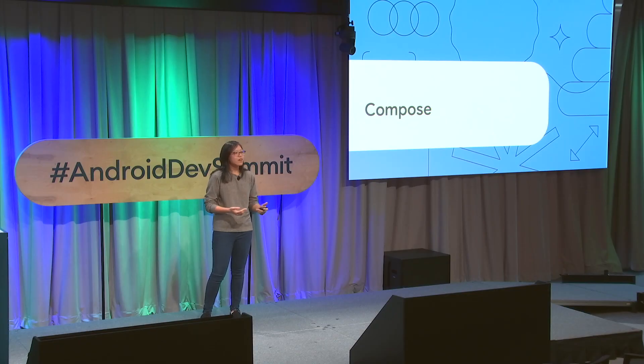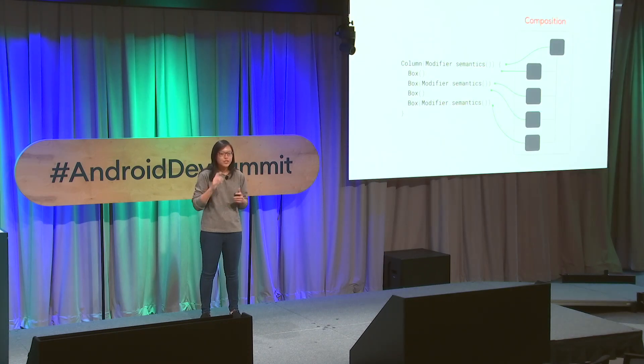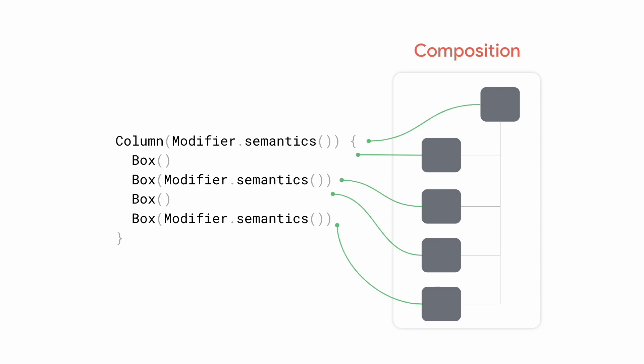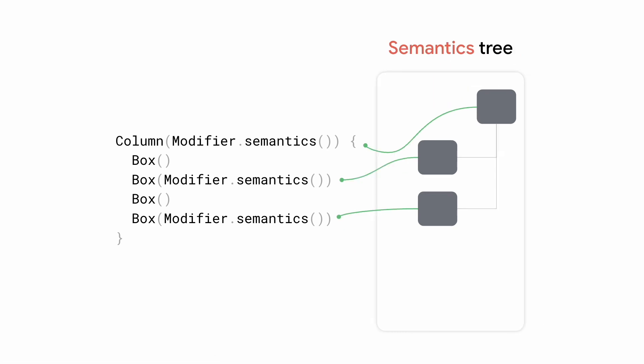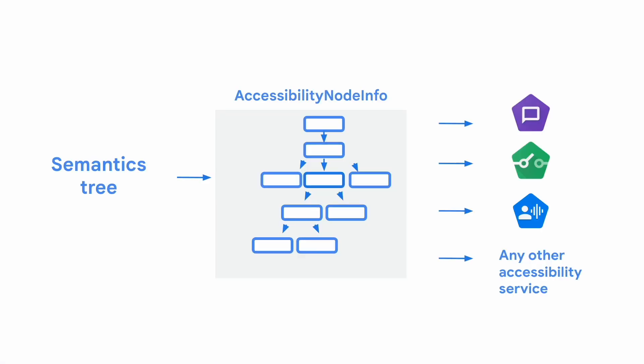Now that we have a better understanding of how the framework works with your app to enable different Accessibility Services, we're going to dive into how this all translates in Compose. When you create Composable Functions and the Composable is invoked, a composition is created to describe your UI. As part of the composition, a semantics tree is also generated. This semantics tree is especially important because it contains all the information about the meaning of each node — including the label of each element, the actions each element has, or what kind of component it is. Similar to how Accessibility Node Infos were automatically populated in the old view system, the semantics tree is also automatically generated if you're using components from the Compose Foundation Library or the Material Library. And it's with the semantics tree that the Accessibility Node Info tree is then able to be generated to power Accessibility Services.